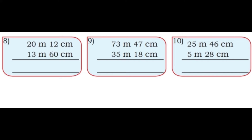Eighth: 20 m 12 cm + 13 m + 13 m + 13 m + 16 cm. 2 + 0 = 2; 1 + 6 = 7; 0 + 3 = 3; 2 + 1 = 3. Answer: 33 meters 72 centimeters. Ninth: 73 m 47 cm + 35 m 18 cm. 7 + 8 = 15, write 5 carry 1; 1 + 4 = 5; 5 + 1 = 6; 3 + 5 = 8; 7 + 3 = 10. Answer: 108 meters 65 centimeters.